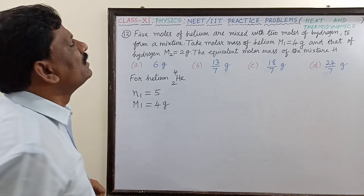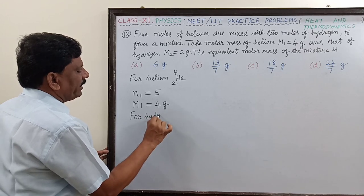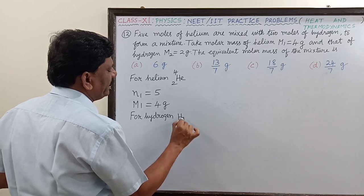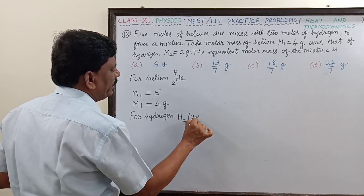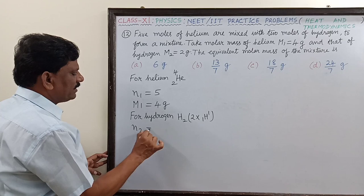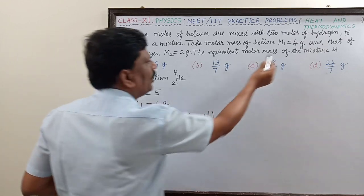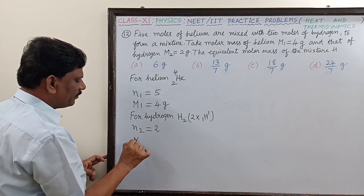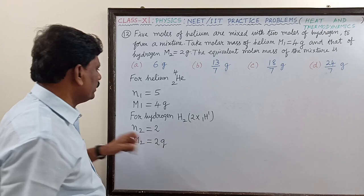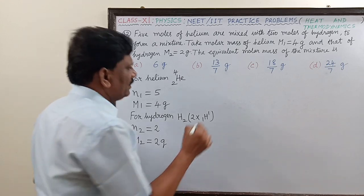Next, hydrogen. For hydrogen, hydrogen is diatomic, is it not? So we write H2 like this. H2, that means 2 into 1. And for this, the number of moles is equal to 2, and its molar mass is given as M2 equal to 2 grams. So M2 equals 2 grams.